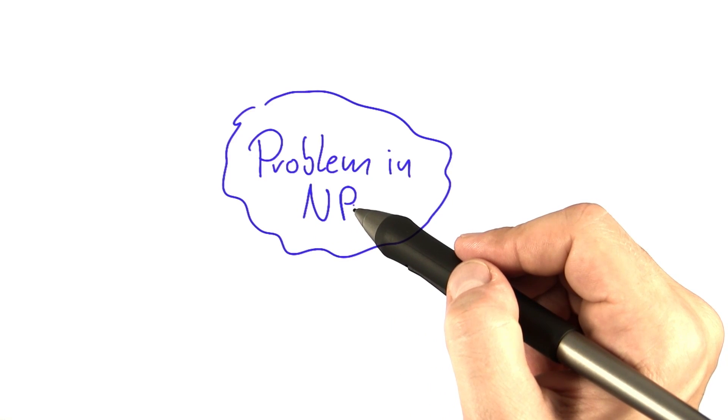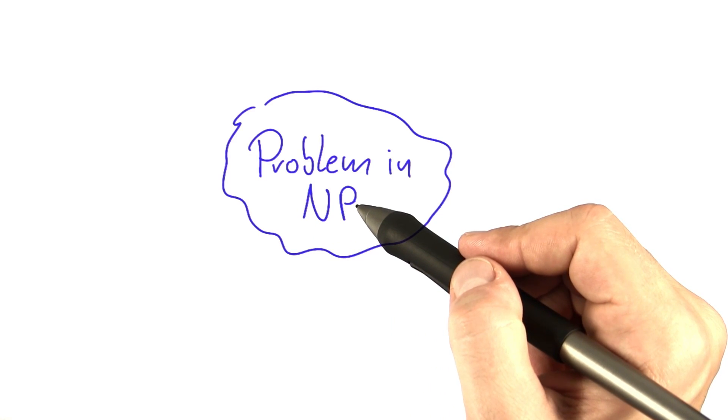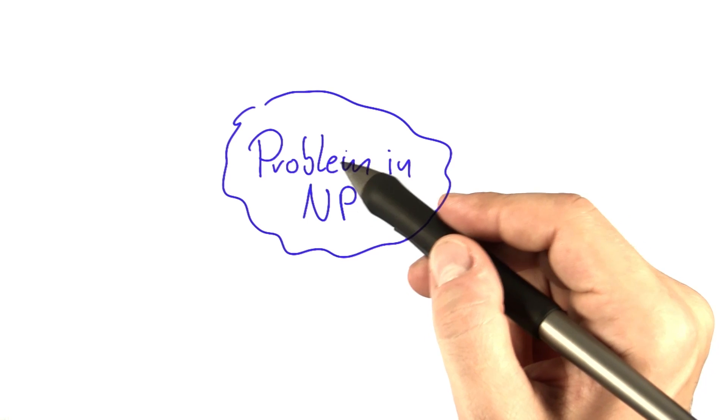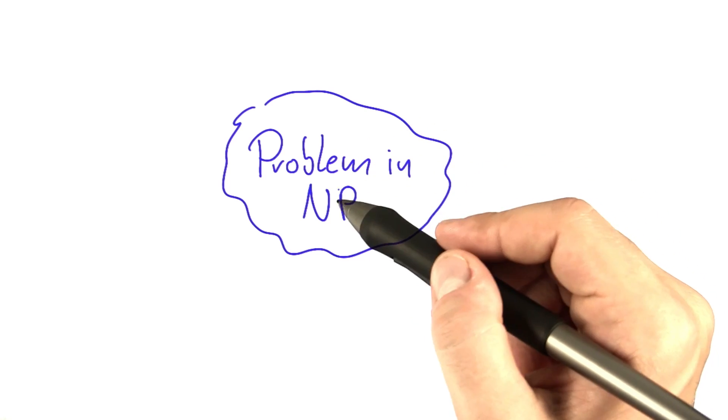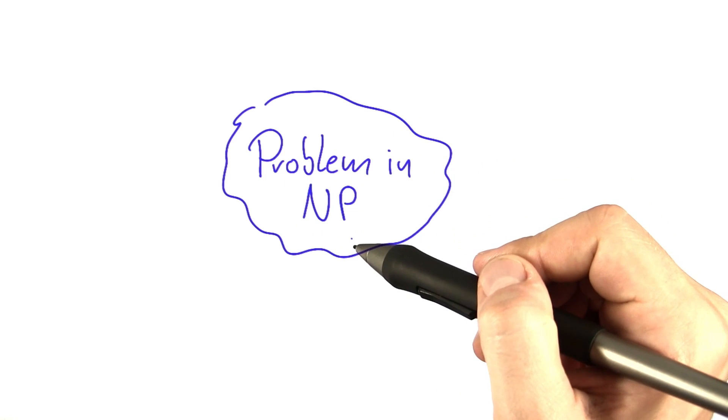So let's say now that you have a problem that you know to be in NP, such as vertex cover. There's basically two ways that you could show this problem to be NP complete.